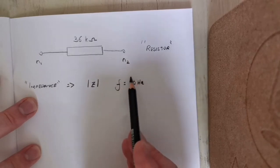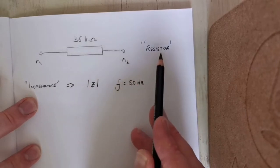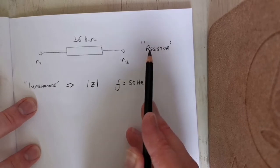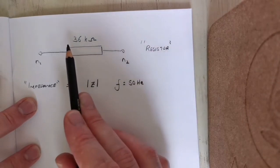The inductors and capacitors, their impedance depends on the frequency value, whereas the impedance of a resistor is fixed.